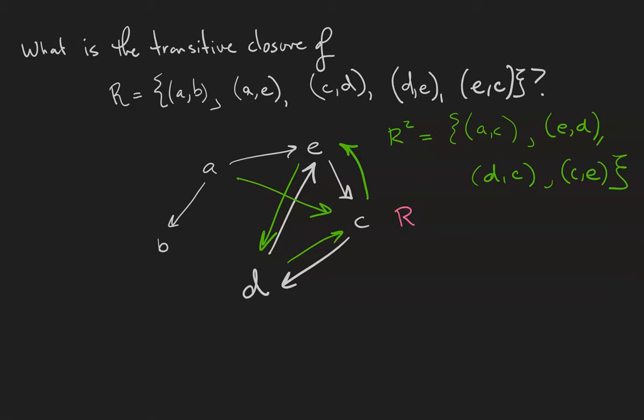Next, let's calculate the relation R^3, which contains the arrows a to d, because you can go from a to e to c to d, so that's three steps. Notice also, for any of the elements of this triangle e, c, d, you can get back to that element in three steps, so R^3 will also contain these three loops.